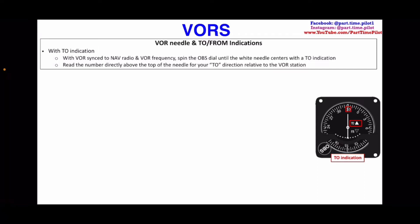Let's start with a TO indication. We'll do an exercise to get a TO indication, then a FROM indication, and explain what that means. With your VOR synced to your nav radio — if we're using VOR1, we want to use nav radio 1 — and a VOR frequency dialed in, let's say we found a specific VOR station on our sectional chart. Once we have that dialed in, we spin the OBS dial until the white needle centers with a TO indication.